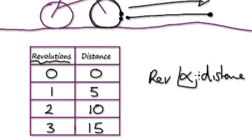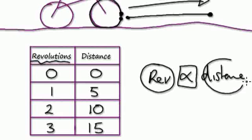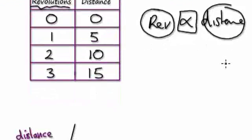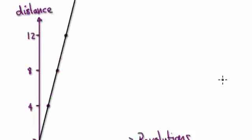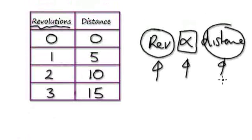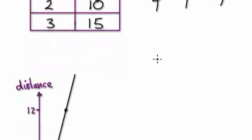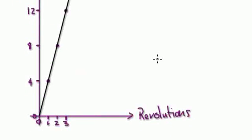Whenever you see that one thing is directly proportional to another thing, you can jump to a graph. Whenever something is directly proportional to another thing, it will be a straight line on a graph. For example, one revolution here, you can travel four meters. Two revolutions, you travel eight meters. Three revolutions, you travel 12 meters.